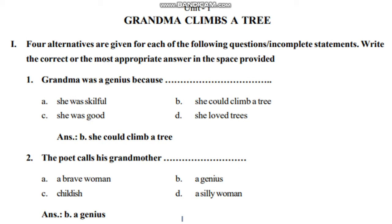First question: Grandma was a genius because — Option A: she was skillful, Option B: she could climb a tree, Option C: she was good, Option D: she loved trees. The right answer is Option B — she could climb a tree. That is why the author called grandma a genius.